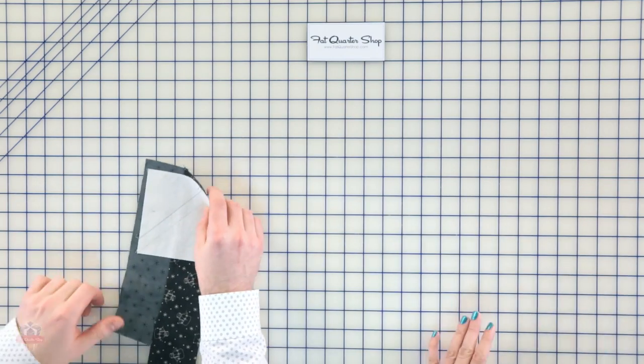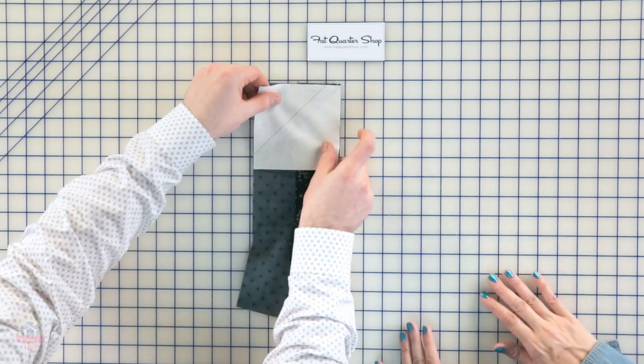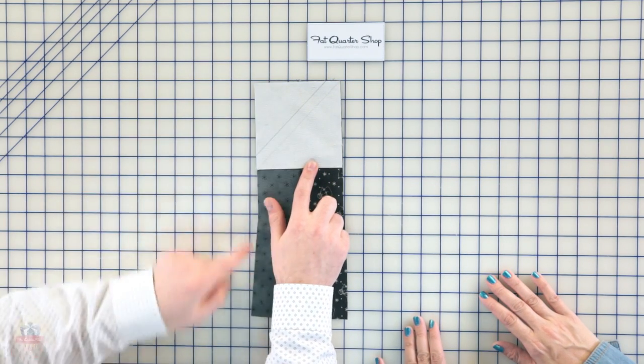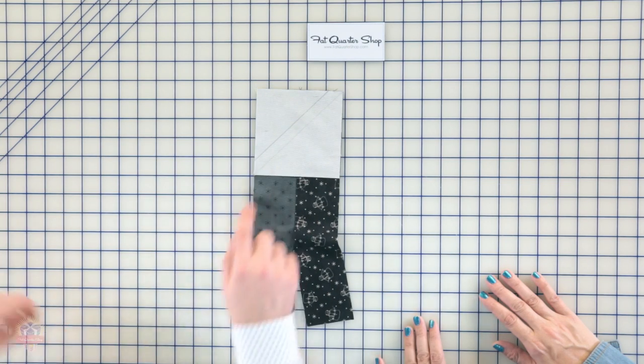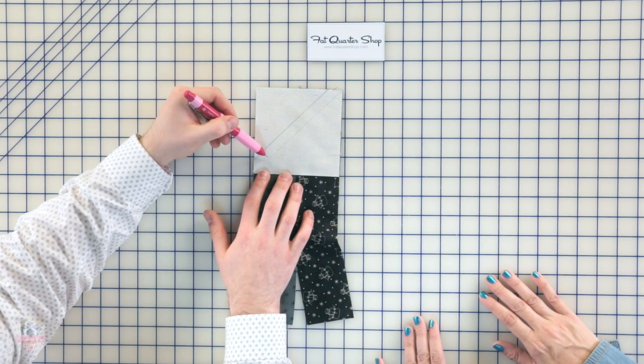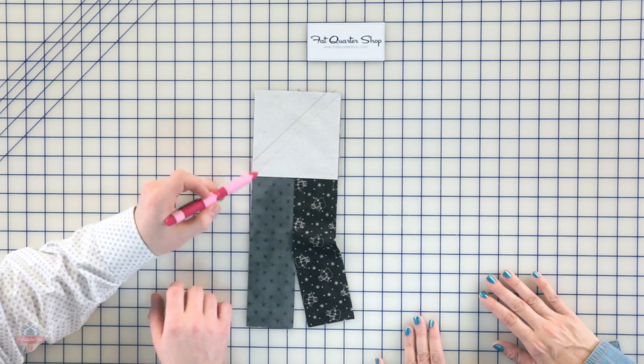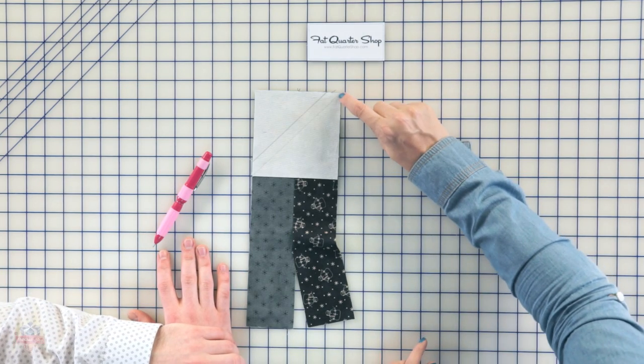We're then gonna place our squares that we drew the lines on in the upper corner. You're gonna want the smaller triangle that we drew up in the upper left corner. You're gonna sew on those lines, and when I sew on the lines, I'm going to sew slightly on the inside of the lines. That will help you with seam allowances and fold over in fabric.